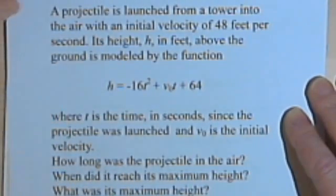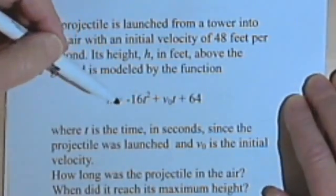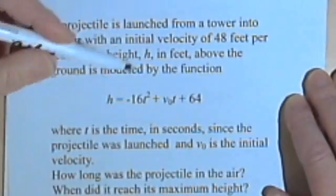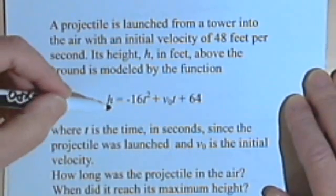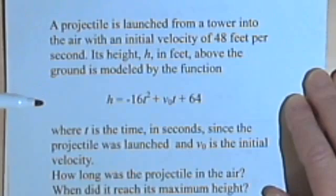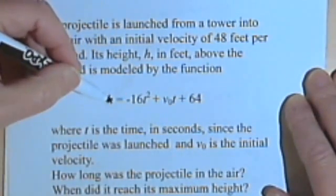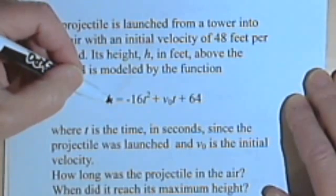I know this looks kind of scary, but it doesn't have to be. It's just a lot of words, and we're given a lot of good information. We're given this formula. So let's look at the formula. h, we're told that h is height. If something is flying through the air, it's going to have some height. So this formula is going to tell us what the height is.